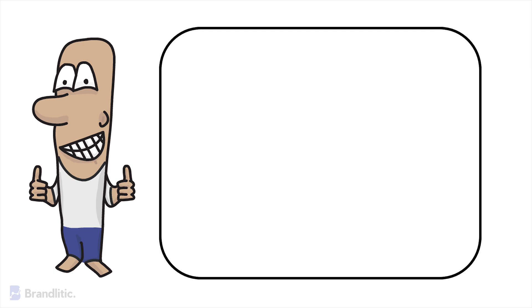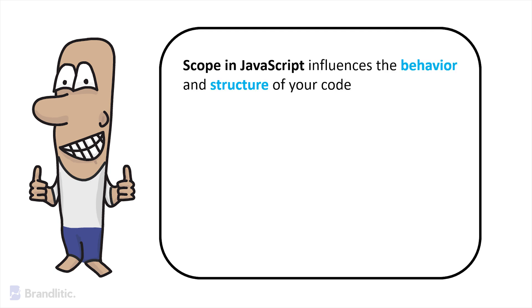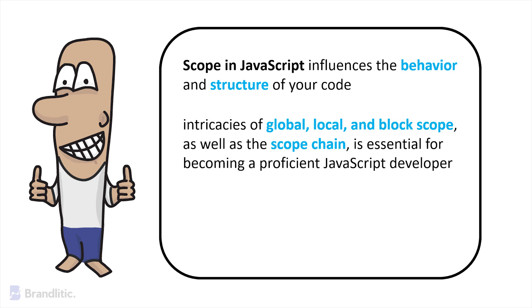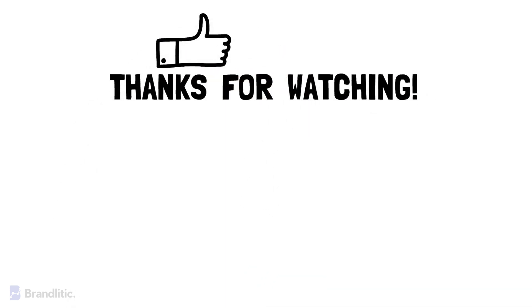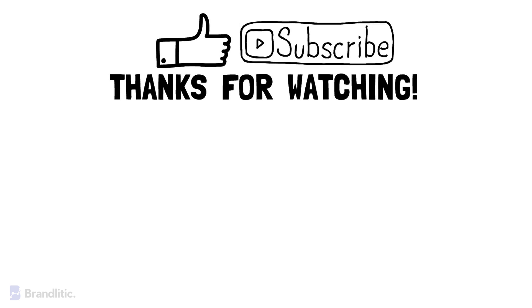In conclusion, scope in JavaScript is a fundamental concept that influences the behavior and structure of your code. Understanding the intricacies of global, local, and block scope, as well as the scope chain, is essential for becoming a proficient JavaScript developer. Keep in mind that scope is not just a technical aspect of programming — it also plays a pivotal role in writing code that is both reliable and scalable. I hope this video was helpful. If you like the content, feel free to smash that like button, and if you haven't already subscribed to the channel, please do, as it keeps me motivated and helps me create more content like this for you.